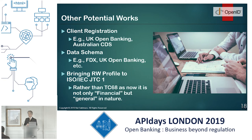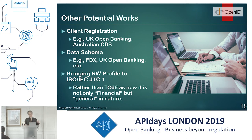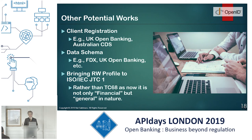Other potential work includes client registration — UK Open Banking is doing that, Australian CDS is doing it. We have dynamic client registration specs but they're very generic for OAuth. We may want to create more constrained data schemas. US FDX has its own data schema, UK Open Banking has another. If we can abstract the common parts into a reusable spec, that might be useful.